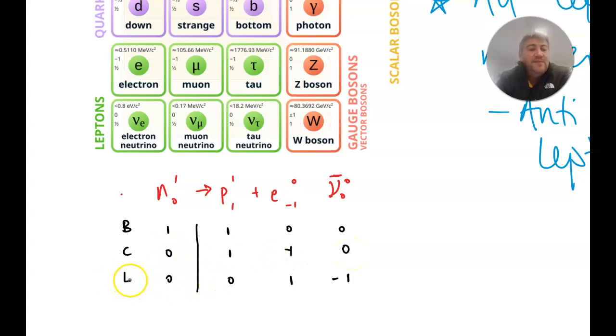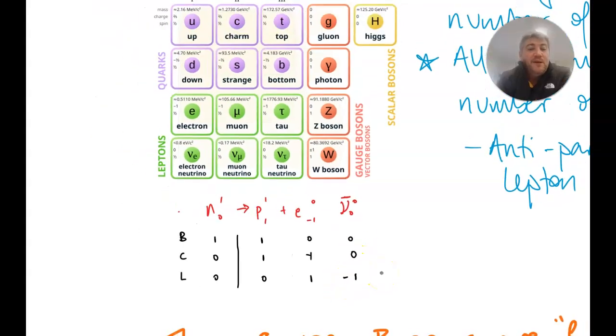Zero, so this is for the lepton numbers. So it's not a lepton, so it's lepton number zero. Zero, similar, this is the normal electron, lepton number of plus one. This is the anti-electron neutrino, so it's got a lepton number of minus one. So also that balances.